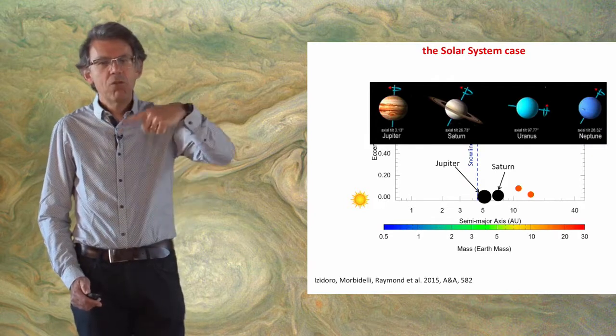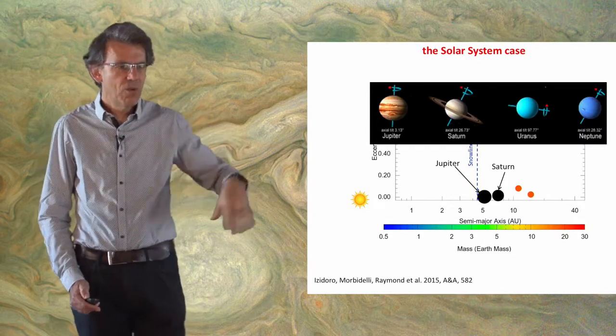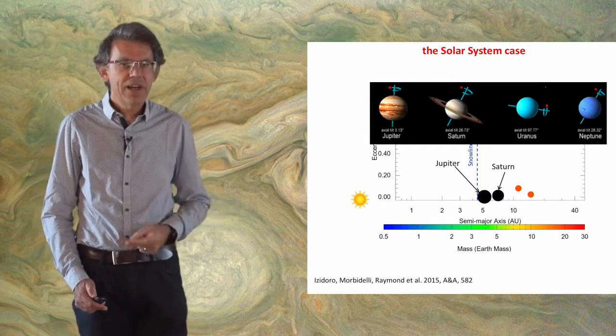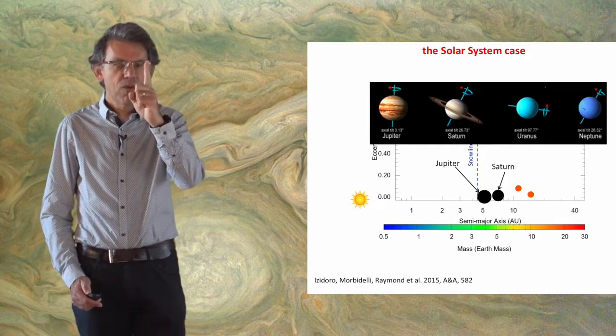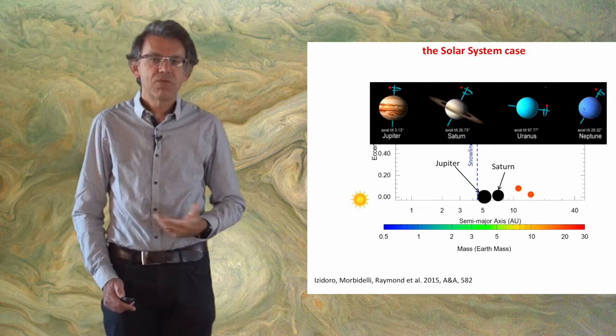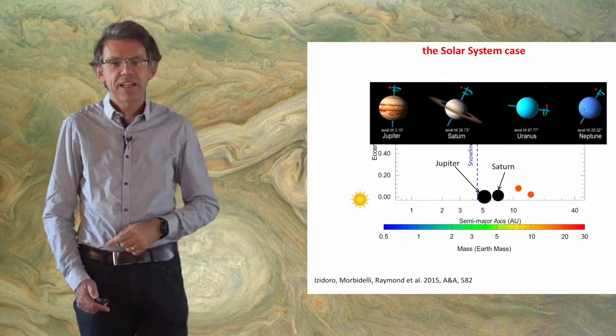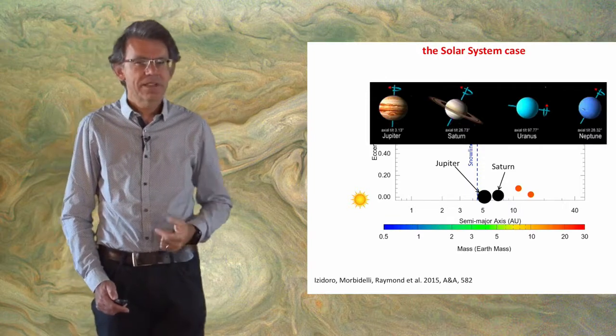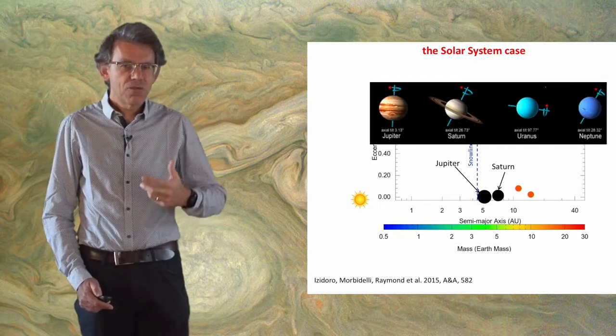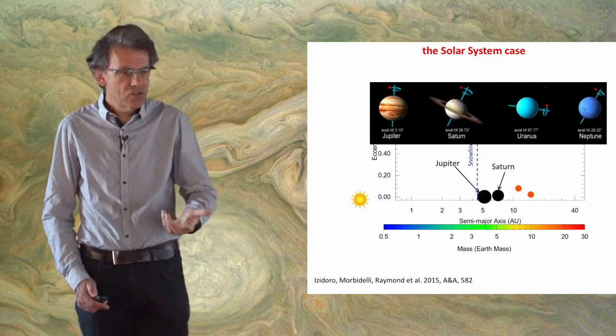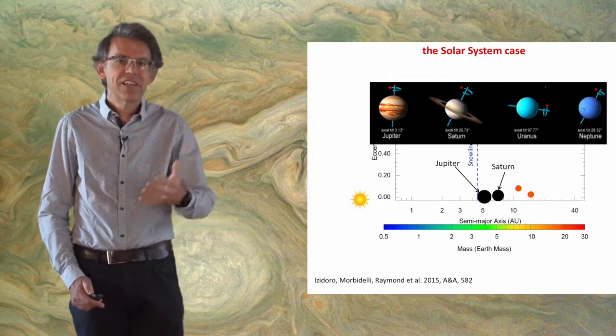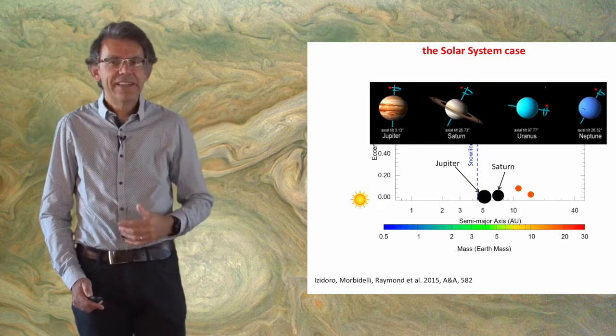If Uranus and Neptune had formed solely by pebble accretion, their spin axis should be orthogonal to their orbit; instead it's very inclined. The only mechanism that has been found to tilt the spin axis of these planets is giant impacts. Our model of formation of Uranus and Neptune predicts that these planets formed by a series of giant impacts among super-Earths, so we not only explain the formation of these planets in terms of masses but also explain the tilt of their spin axis.